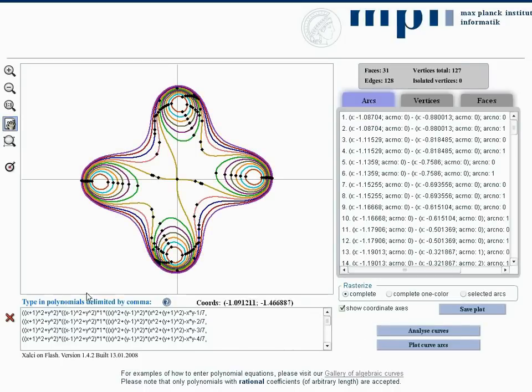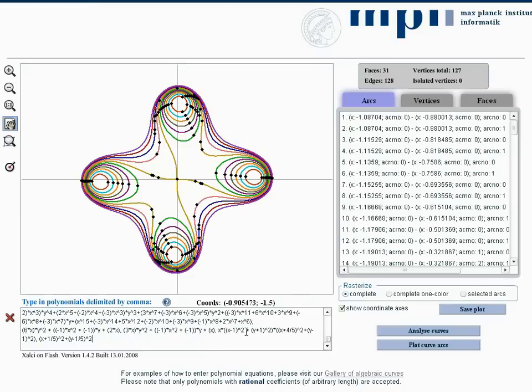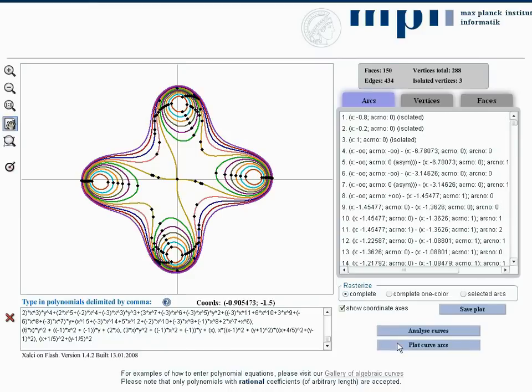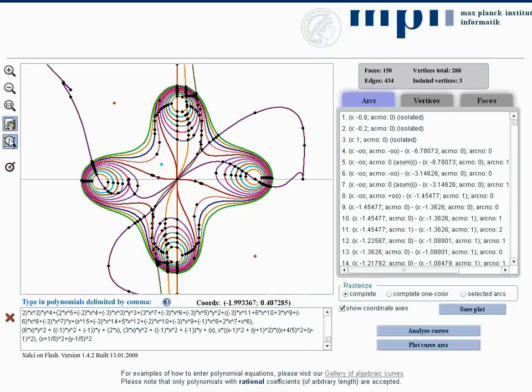We add more curves to create a highly degenerate arrangement containing tangential intersections and vertical arcs. In this example, we now demonstrate more features of our web application.